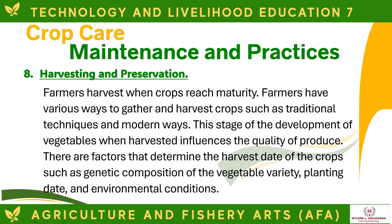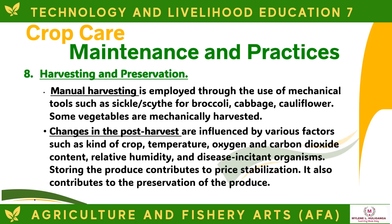Harvesting and preservation: farmers harvest when crops reach maturity, using traditional techniques or modern methods. The stage of development when vegetables are harvested influences the quality of the produce. Factors that determine the harvest date include genetic composition of the vegetable variety, planting date, and environmental conditions. Manual harvesting uses mechanical tools such as sickle or scythe for crops like broccoli, cabbage, and cauliflower. Some vegetables are mechanically harvested. Post-harvest changes are influenced by kind of crop, temperature, oxygen and carbon dioxide content, relative humidity, and disease-incitent organisms.